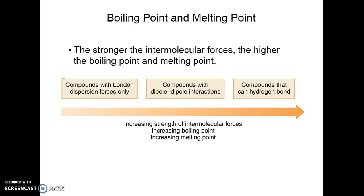Boiling points and melting points are directly related to intermolecular attractive forces. The stronger the intermolecular attractive force, the higher the temperature needed to make the compound melt or boil. Compounds that have weak dispersion forces — small molecules with only London dispersion forces — are going to have very low melting and boiling points. Whereas compounds that can hydrogen bond have high melting and boiling points.